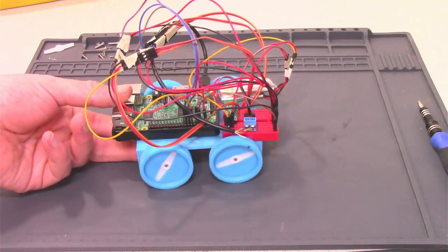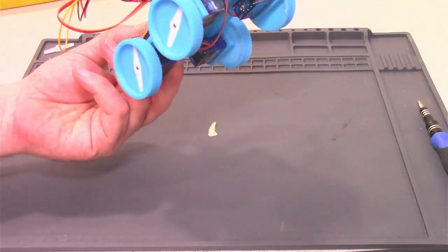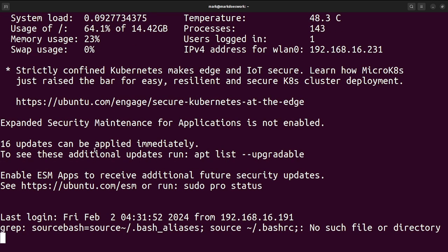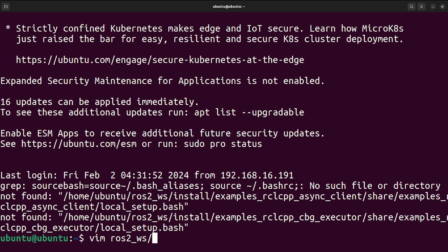Now that it's all put together, I just need to write a little bit of code to get this thing driving around. First I'll SSH into the Raspberry Pi. Like in previous videos, I'll be using ROS to control the robot.